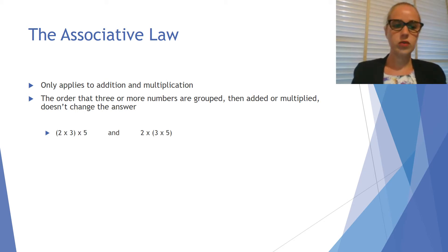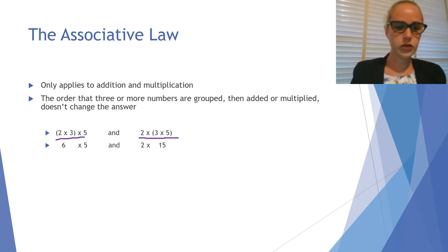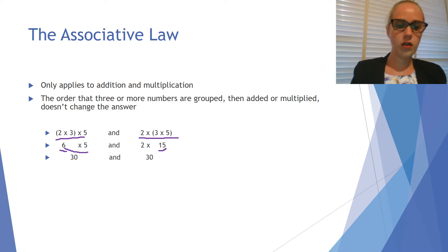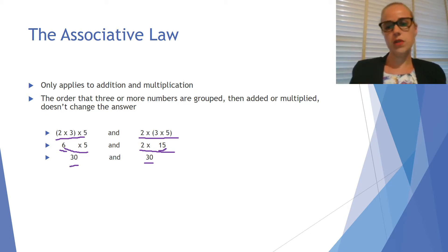To look at some examples, here I've got three numbers: 2 times 3 times 5. It doesn't matter whether I do the 2 times 3 first, or the 3 times 5 first. If I do the 2 times 3 first, I'll end up with 6, and then I still need to multiply by 5. If I do the 3 times 5 first, I'll get 15, and then I need to multiply by 2. So 6 times 5 gives me 30, and 2 times 15 also gives me 30. It doesn't matter which order you group the numbers in when there are 3 or more.